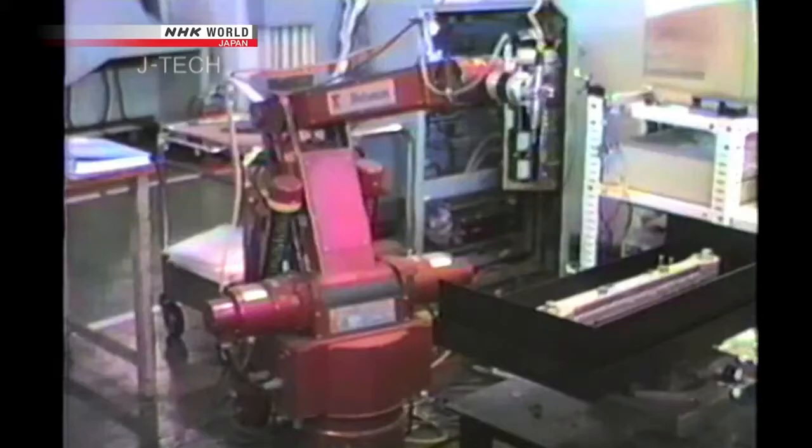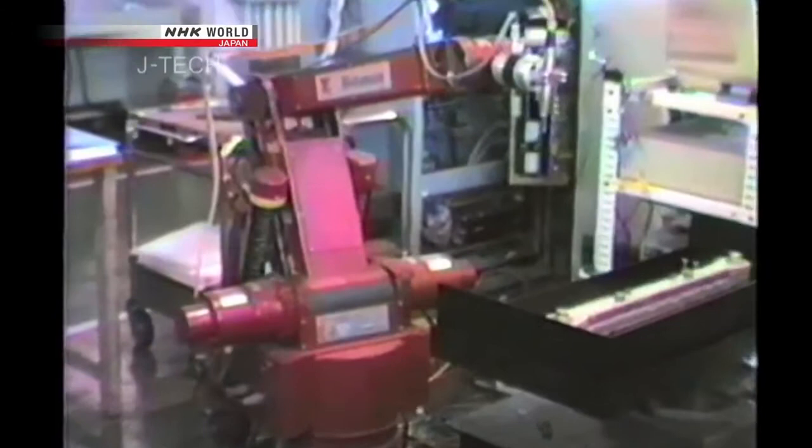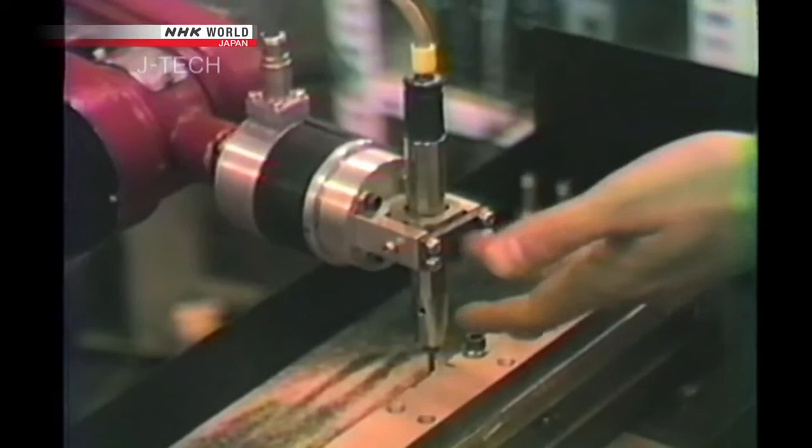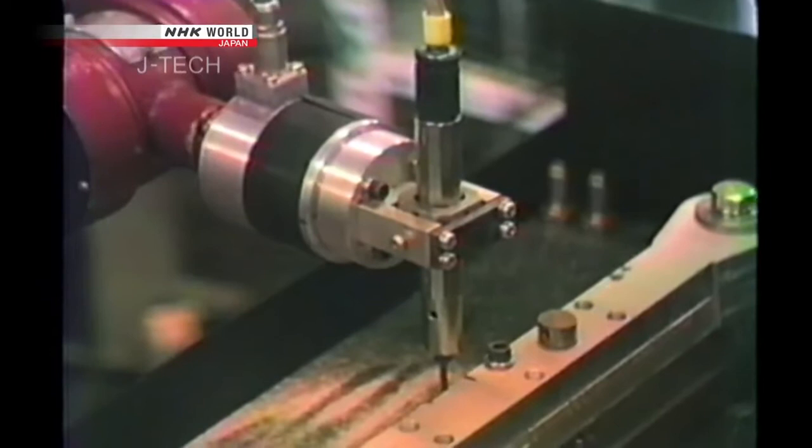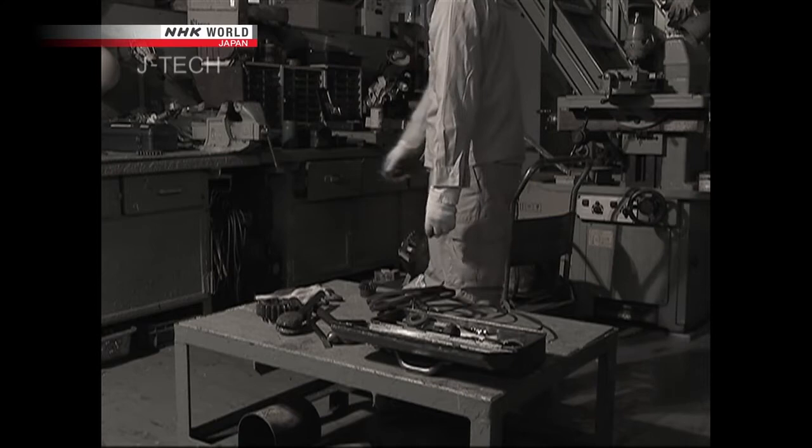But testing revealed a problem. The motive power did not transmit properly to the tip of the arm. Movement of the arm could not be controlled accurately. Precise movements were a must for welding. Suzuki replaced the steel rods with belts. However, they easily got misaligned and elongated over time, losing accuracy once more.